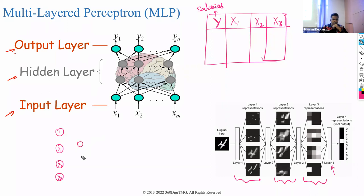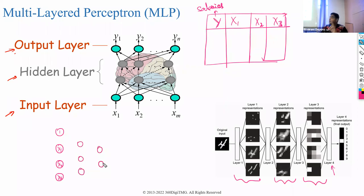Say I want to create two hidden layers. The number of neurons in each hidden layer is also a hyper parameter. You can have as many neurons as you want — three, four, or even hundreds. It's your choice as a hyper parameter.